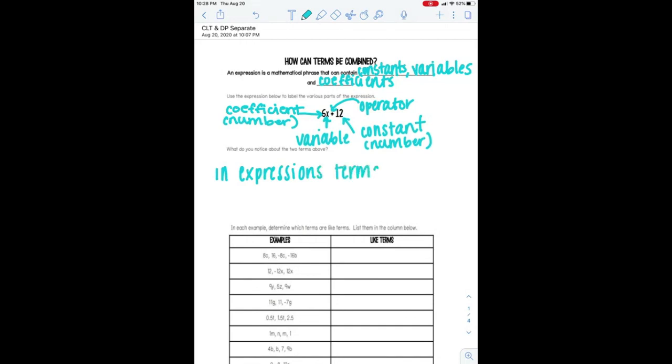So in expressions, terms can be classified as like and unlike. And basically what that means is if they have the same letter attached to them, they are like terms. If they have the same variable, they are like terms. So looking at our first example here down in this table,